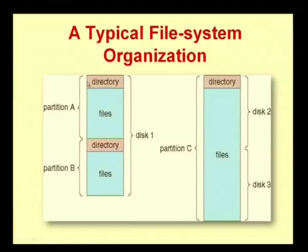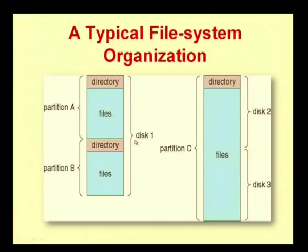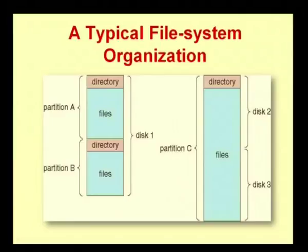Let us see with a diagram. Here, this is a directory — in the directory you have a set of files. This is Partition A, said to be C drive, with a directory containing different files. This is Partition B, which is D drive. All these belong to a single hard disk. The second part of this figure shows a directory with N number of files stored in two different disks — that is, a master drive and a slave drive. This is a typical file system organization.